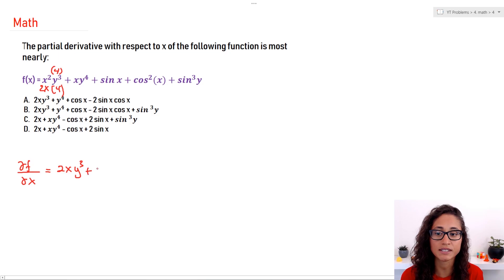Okay, so now let's do the second term. I'm going to take the derivative of x only. Derivative of x is just 1, so I'm just going to have y to the power of 4. Now we have sine of x. Derivative of sine is actually cosine, so we're going to do plus cosine of x.